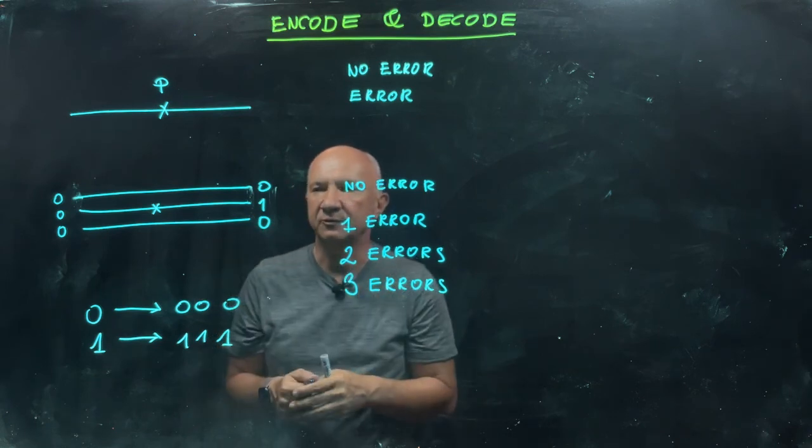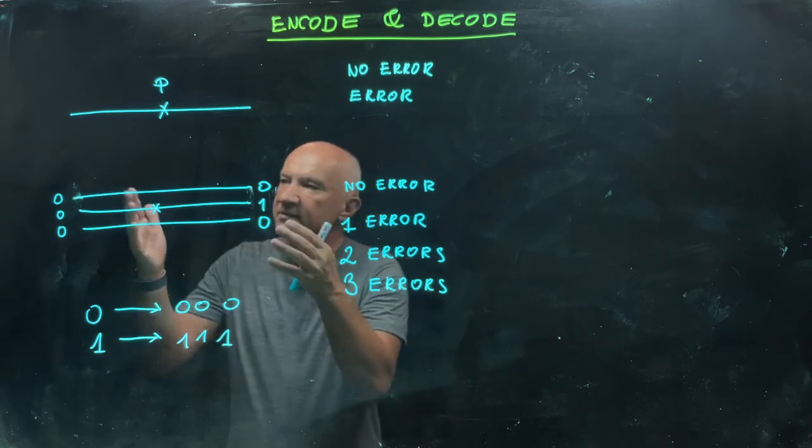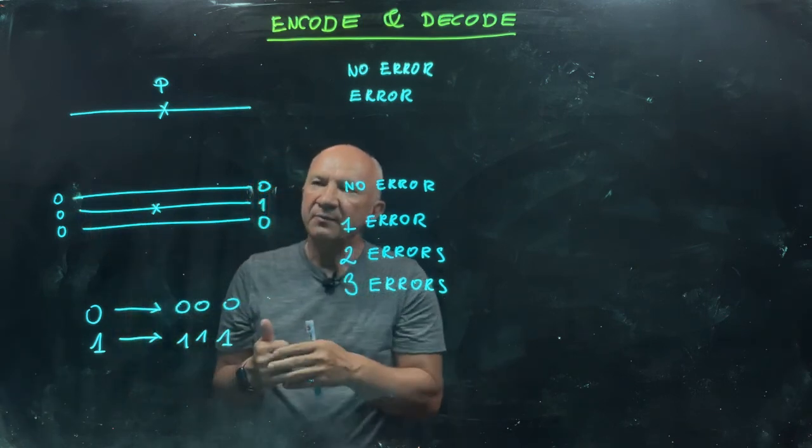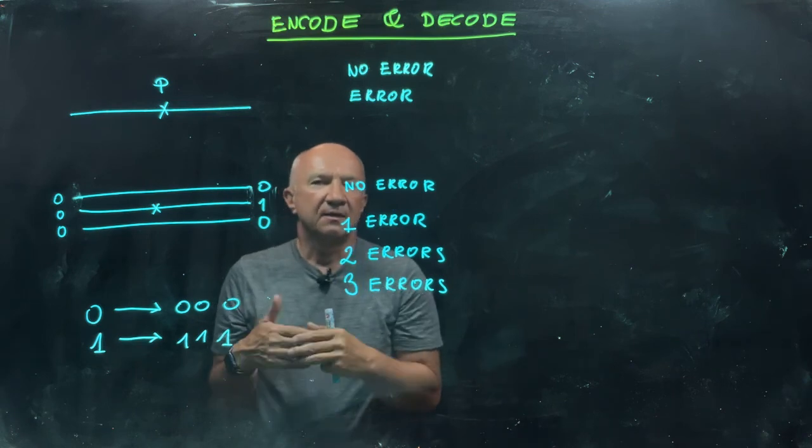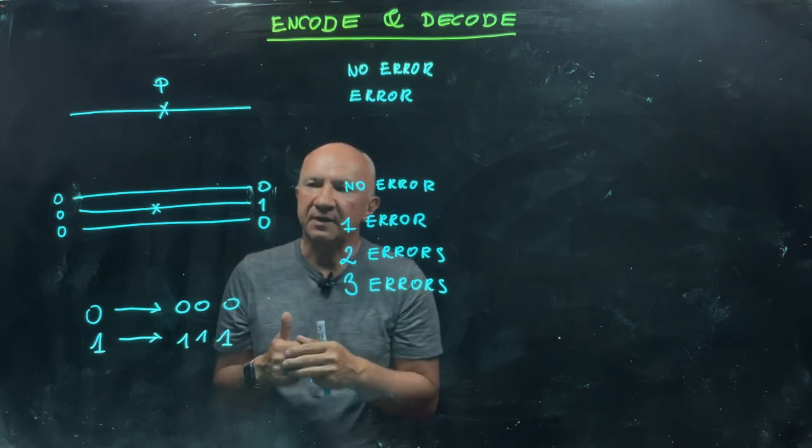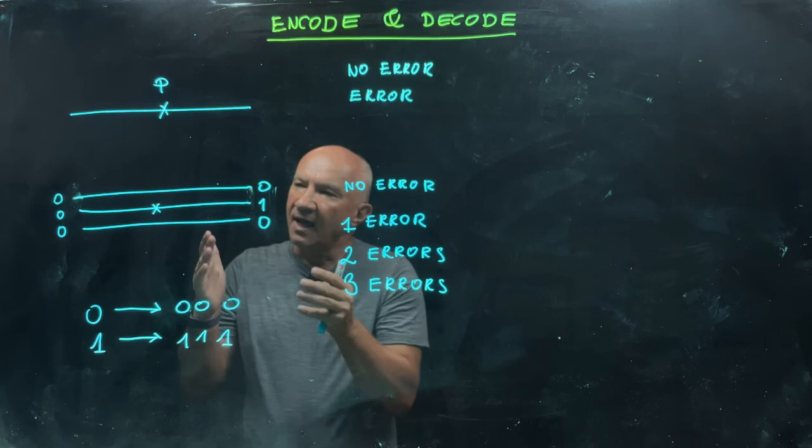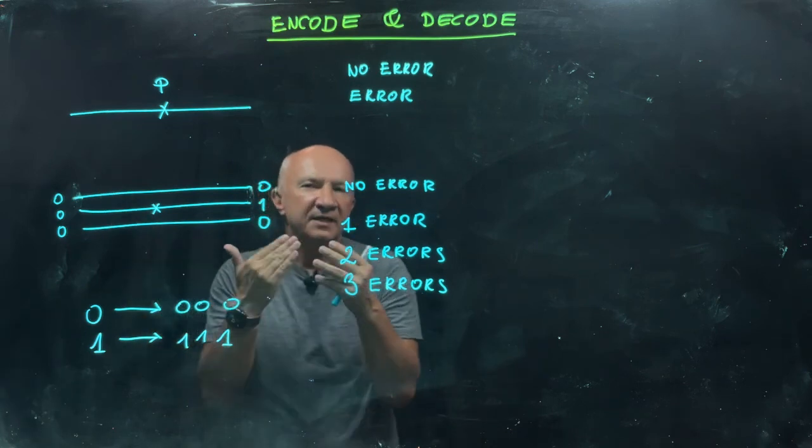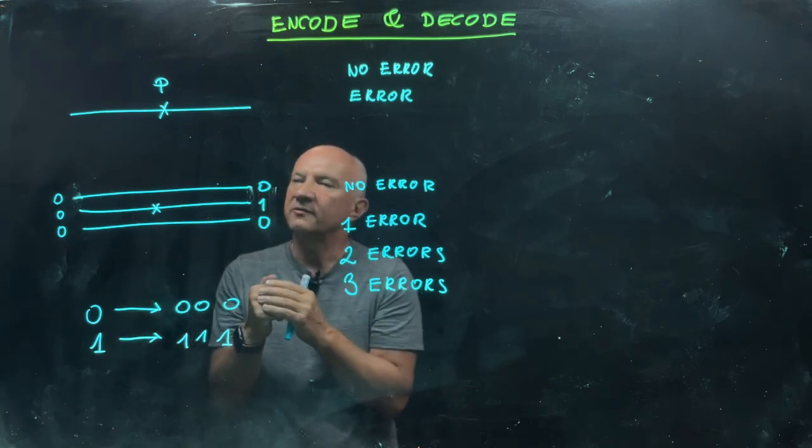The majority voting rule says: if you see more zeros at the output, zero was sent; if you see more ones at the output, one was sent. In this case, one error happened—you see at the output zero-one-zero—then your decoding rule tells you that zero was sent. This kind of scheme allows you to correct for at most one error.